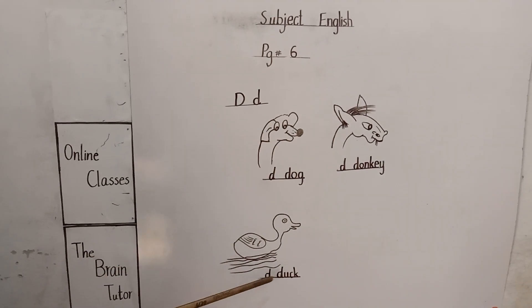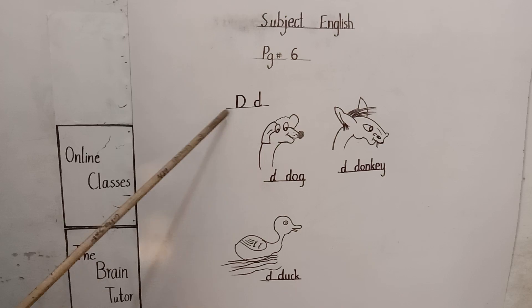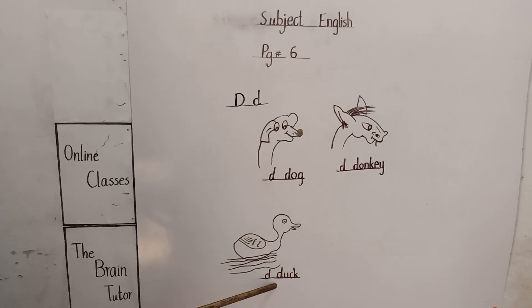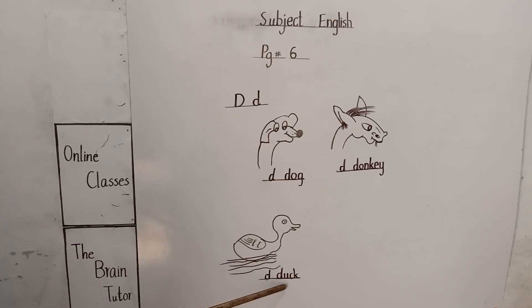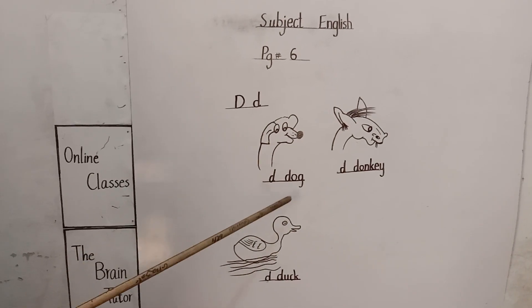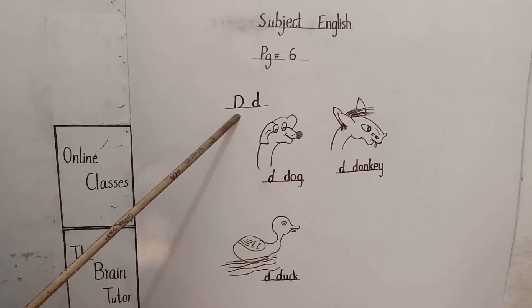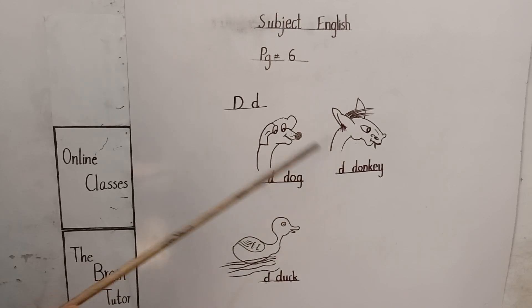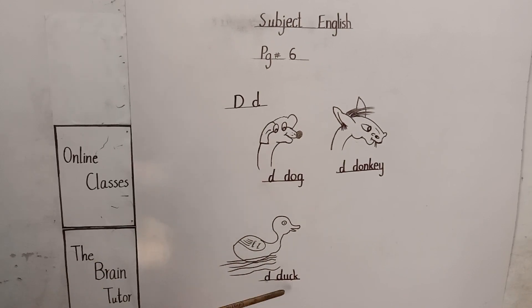D for duck. D for duck. D-U-C-K, duck. D for dog. D for donkey. D for duck.